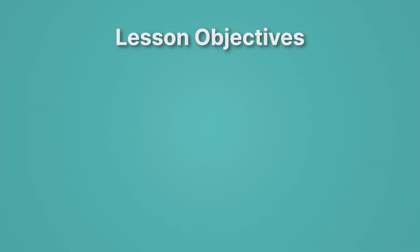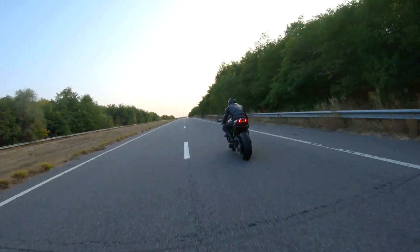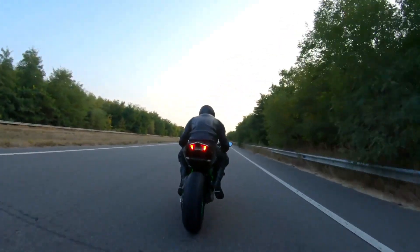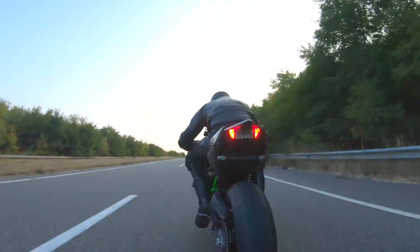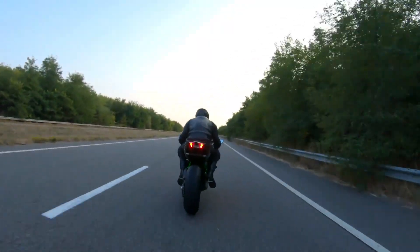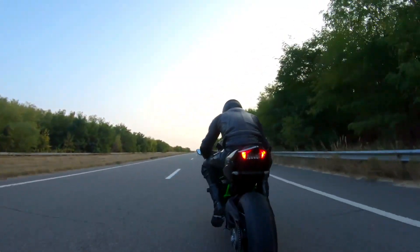First, let's review our lesson objectives. We'll start by defining acceleration. Then we'll introduce the units of acceleration. And lastly, we'll calculate acceleration. This motorcycle is moving at an incredible speed. But as long as it's staying at the same speed, its acceleration is zero. Let me show you what I mean.